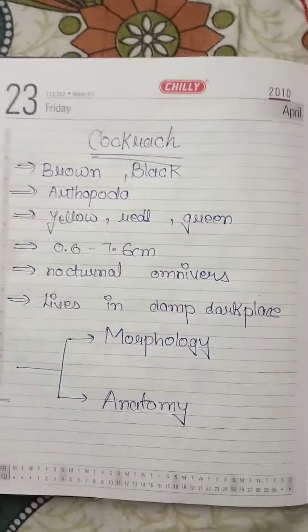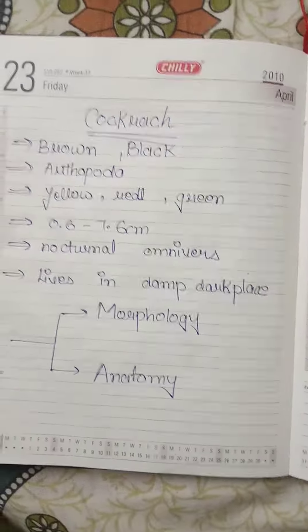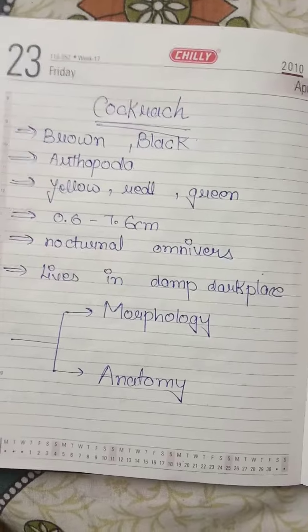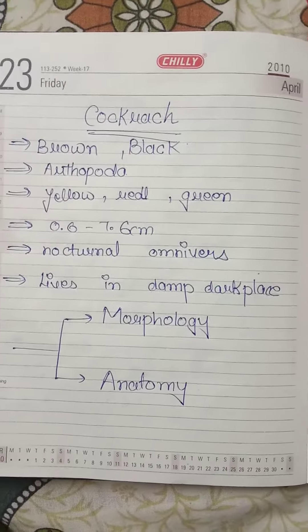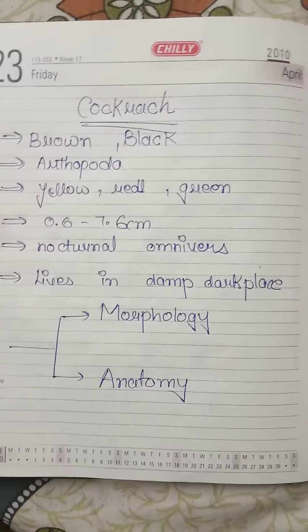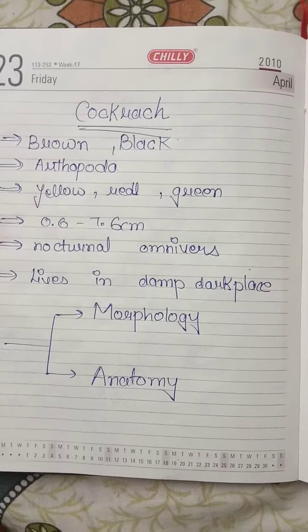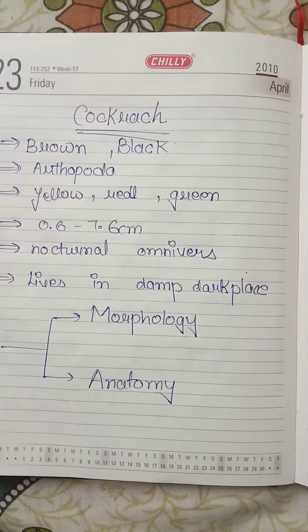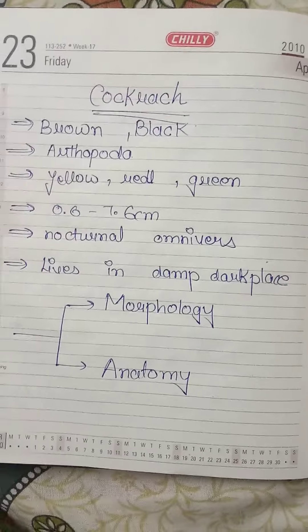Hello guys, today we are going to study about cockroach. Cockroach is brown color and black color insect. It belongs to phylum Arthropoda. It is available in yellow, red and green color at various forests or in tropical areas.